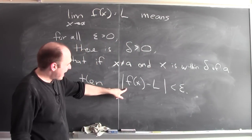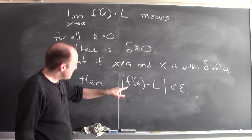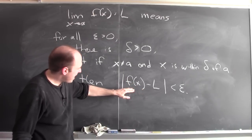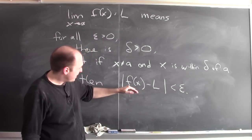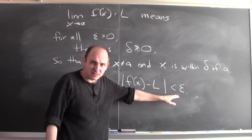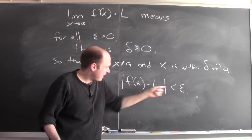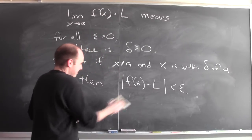And I can do the same thing to this absolute value of a difference. The absolute value of f of x minus L, that's the distance between f of x and L. And to say that the distance between f of x and L is less than epsilon, well that just means that f of x is within epsilon of L.